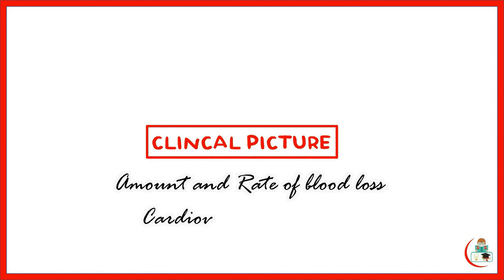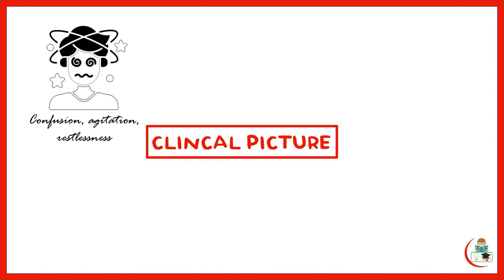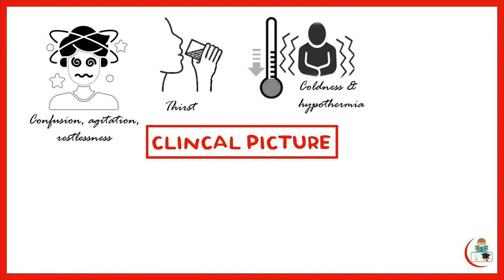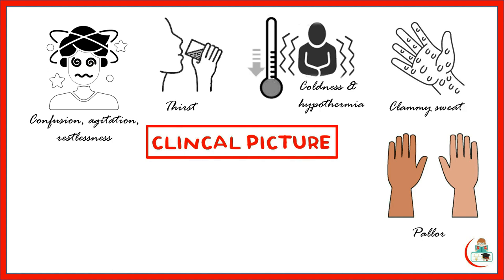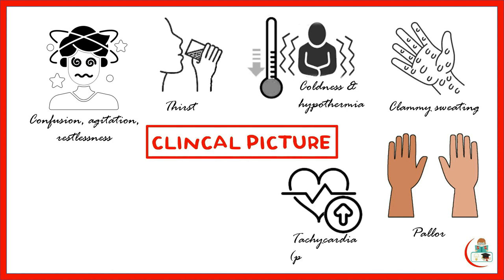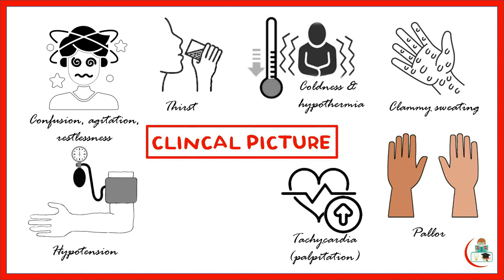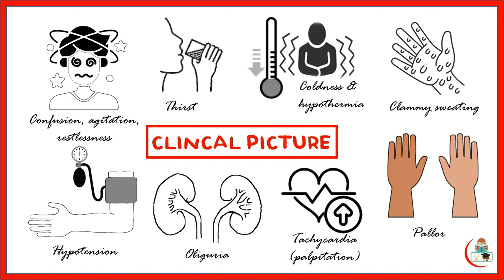The clinical picture of hemorrhage depends upon the amount and rate of blood loss, as well as the cardiovascular reserve status. In general, all manifestations are due to hypovolemia and reduced tissue perfusion. As regards mental status, there is slow speech, confusion, agitation, and restlessness. The patient complains of thirst with coldness sensation and becomes hypothermic. The skin is pale and cold with clammy sweating. The patient is tachycardic and complains of palpitation. Blood pressure is maintained in the early stages, but with failure of compensation, a drop in pressure occurs. The kidneys manifest decompensatory mechanisms by oliguria, which is reduced urine output.